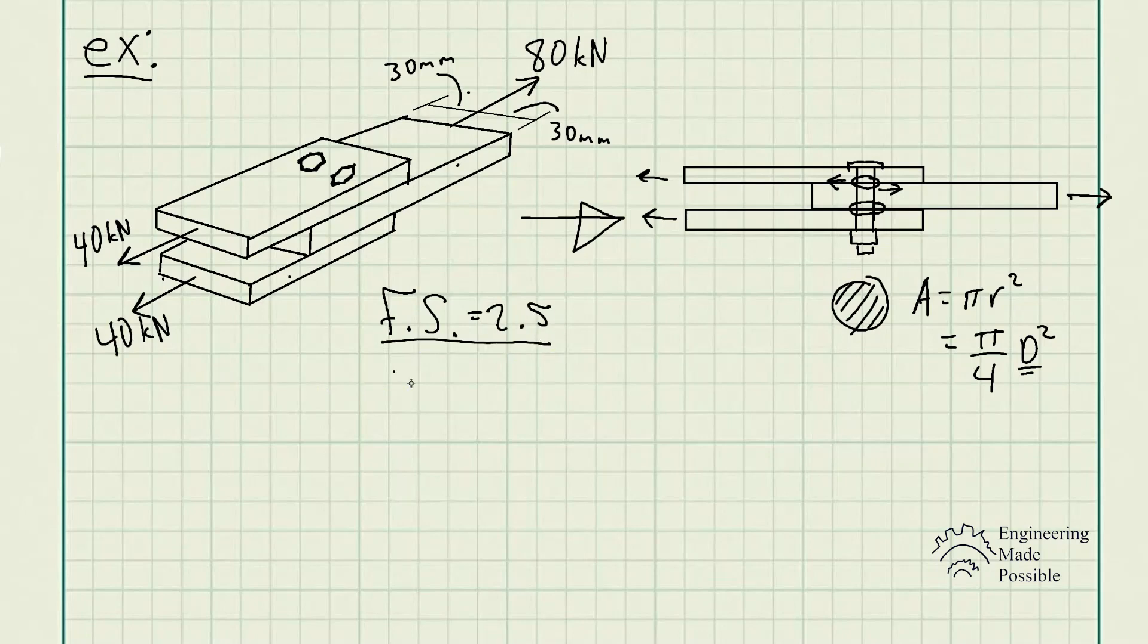The failure shear stress is 350 megapascals. So with this information given, it should be sufficient to be able to solve for the unknown, which is the diameter of the bolts.